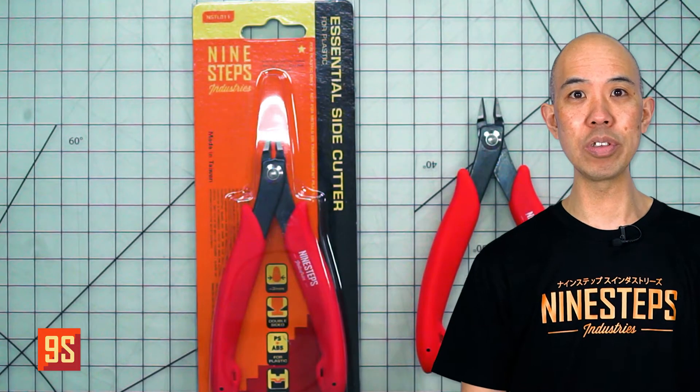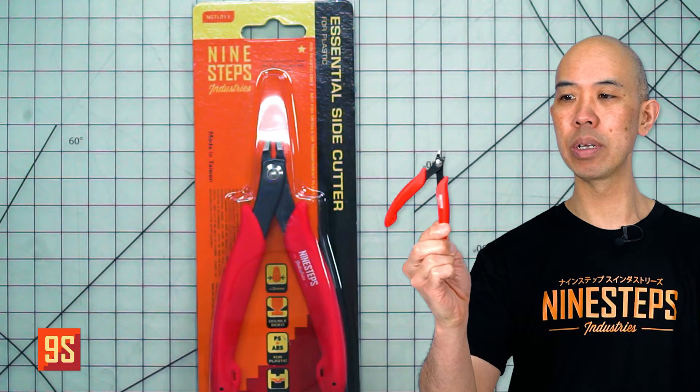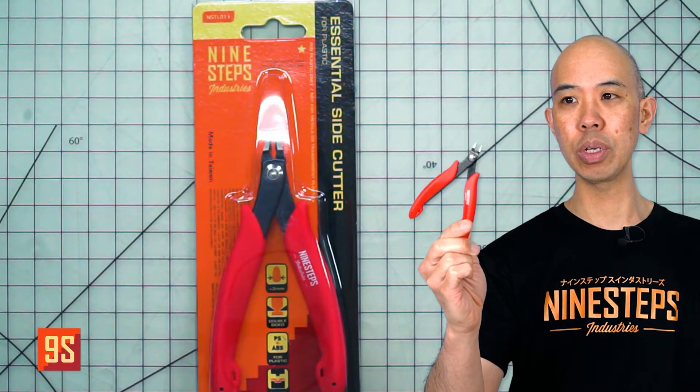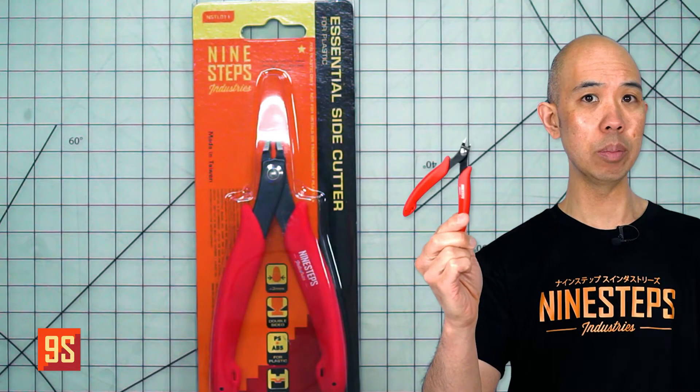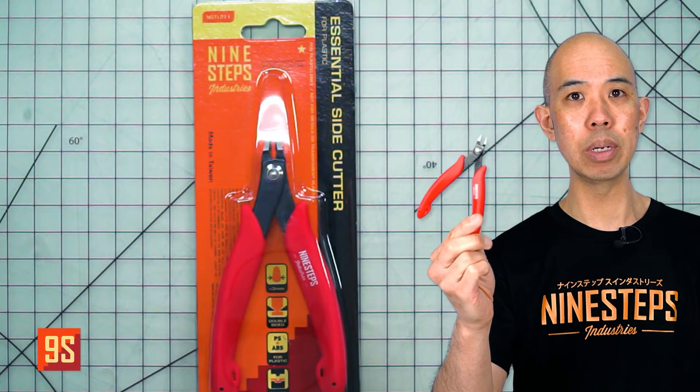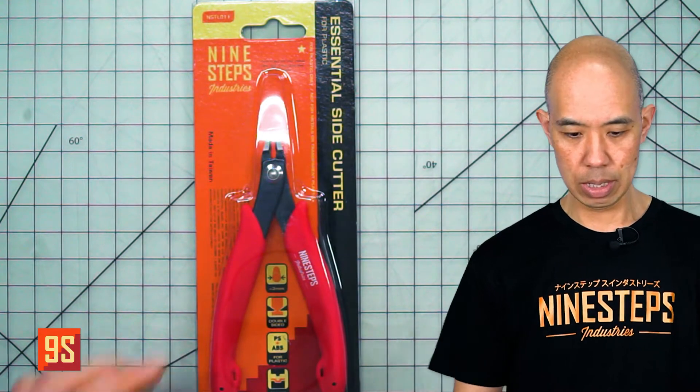Welcome to Nine Steps Industries and the Essential Side Cutter. Side cutters, or nippers as they're sometimes called, are used for cutting plastic from model sprues and also for other plastic parts as well, perhaps plastic profiles and other parts for your crafts.